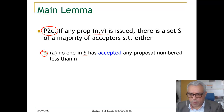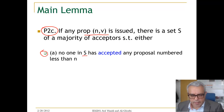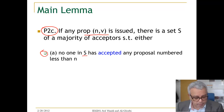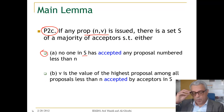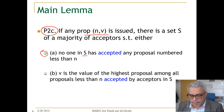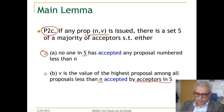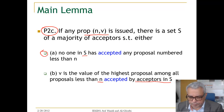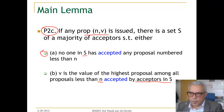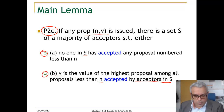So when you issue a proposal, if we know there is no proposal less than N accepted by this majority set, it means they are already in their initial state and did not accept any value — then we are allowed to propose value V. The other alternative is if V is the value of the highest proposal among proposals less than N accepted by acceptors in set S.